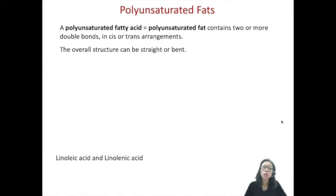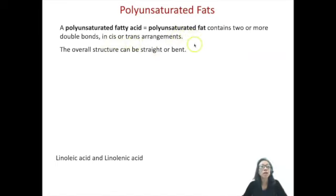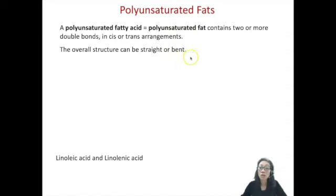In general, having one or more double bonds will lead to a bent overall shape, though it does depend on the cis or trans arrangement. This is also true for polyunsaturated fats. When there are two or three double bonds, the overall structure can be straight or bent depending on the arrangement of those double bonds.